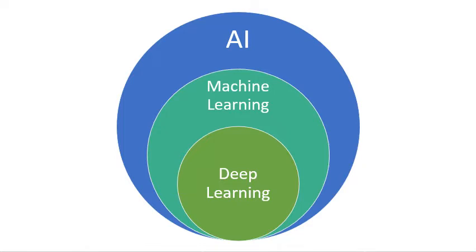So what is deep learning? Deep learning is actually a subfield of machine learning, and machine learning is a subfield of artificial intelligence. Therefore, in order to understand deep learning, we need to know the basic ideas of machine learning first.